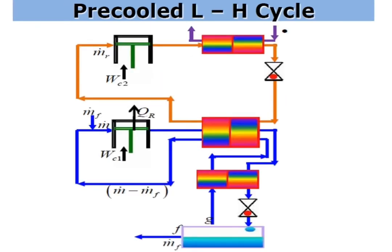Here I have given the total schematic diagram for a pre-cooled Linde-Hampson cycle. The bottom portion represents the LH system and the top portion represents the pre-cooling cycle. The combination is known as the pre-cooled Linde-Hampson cycle. We need to think about what advantage we get by adding a pre-cooling cycle into the Linde-Hampson system. The temperature of the medium leaving compressor WC1 can be reduced with the help of the pre-cooling cycle.